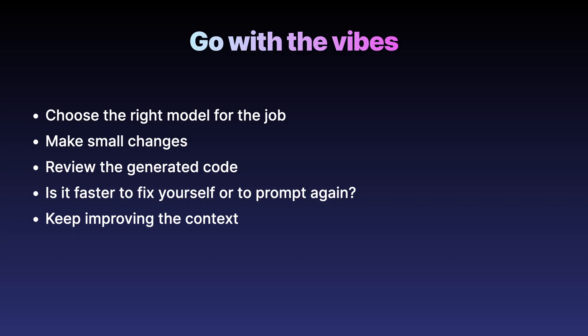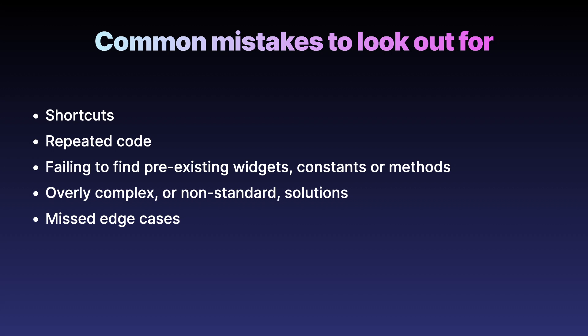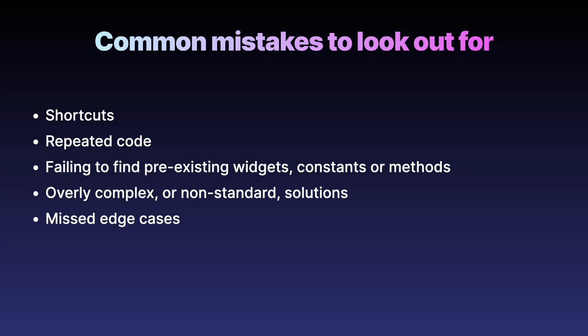Finally, keep improving your context — update your agents.md, add examples, extend your MCP server. The reality is LLMs make a lot of mistakes. They take shortcuts almost always. They do the least amount of work to complete a task. They repeat code — sometimes I've found they will write two almost identical methods above each other rather than combining them into a single method. They fail to find existing widgets, constants or methods and instead just write new ones. This is especially troubling with Flutter widgets that you want to reuse across screens — having multiple copies will almost certainly bring them out of sync. They create inconsistent solutions for the same problems in different parts of your app. Often they produce overly complex, non-standard solutions. They miss edge cases which can create unexpected behaviors down the line. In tests they often use just a happy path. So these are all things you really have to watch out for.